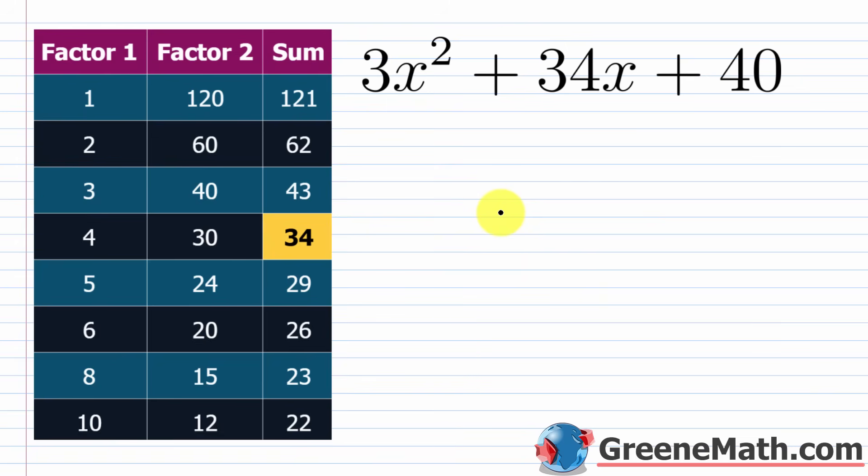In this lesson I'm going to do two examples of the slide and divide method for factoring trinomials when the leading coefficient is not one, and at the end of the lesson I'll show you where this is coming from using a simple substitution technique.